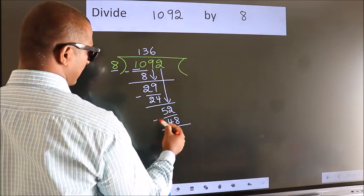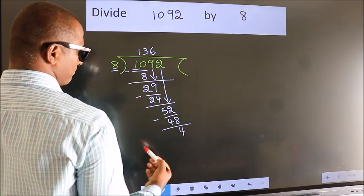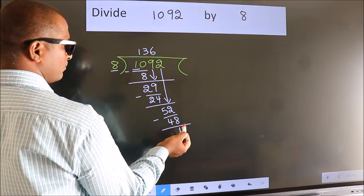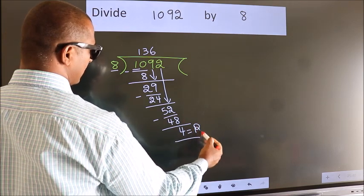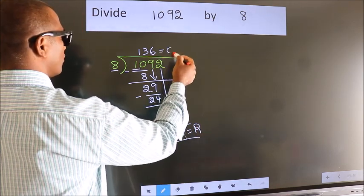Now, we subtract. We get 4. No more numbers to bring down. So, we stop here. This is our remainder. This is our quotient.